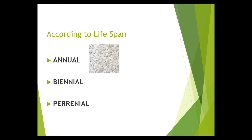Next is the biennial, which is a plant that requires two growing seasons. The first season is for growth and accumulation of food reserves; the second is for production of reproductive parts. It grows from seed, produces flowers and seeds, and then dies. An example of a biennial is cabbage.